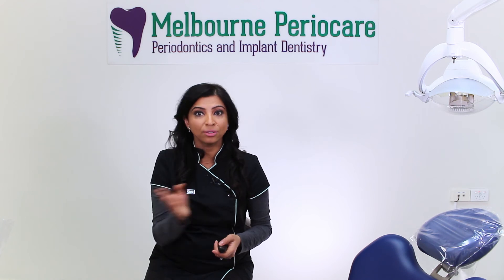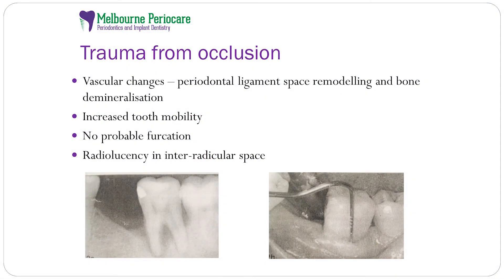The third biggest reason is trauma from occlusion. It causes vascular changes resulting in periodontal ligament space remodeling and bone demineralization. Generally we can see these changes in the radiographs, but many times there is no pocket depth associated with it. Tooth mobility can be seen in these cases.